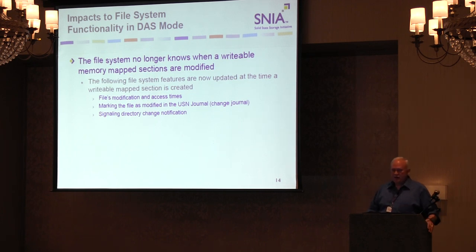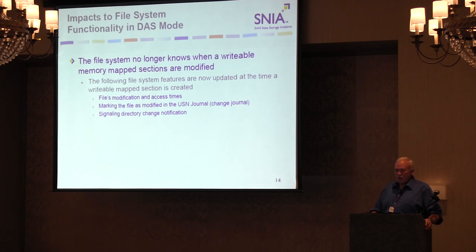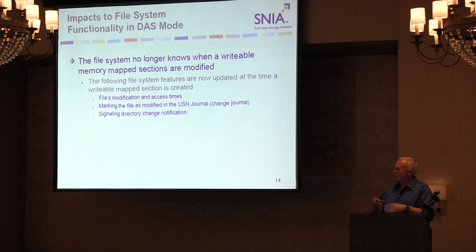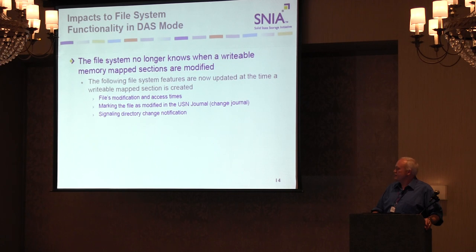Another challenge is that even when you create a memory map section, there are things you no longer know. It's hard to tell when a file is modified or that its access time has changed because you don't see any writes to it. The change journal has trouble detecting that a file has been changed. Windows also has directory change notification, which informs applications when a file in a directory hierarchy is changed. For these things, we are currently updating them when a section is created — not the most ideal solution, but the cleanest we have right now. These are areas we hope to improve in the future.